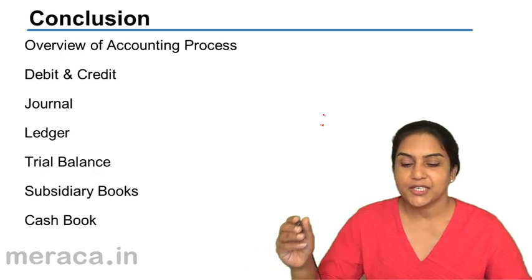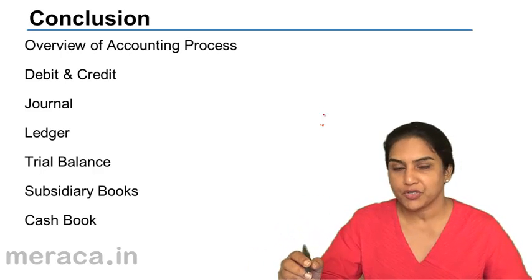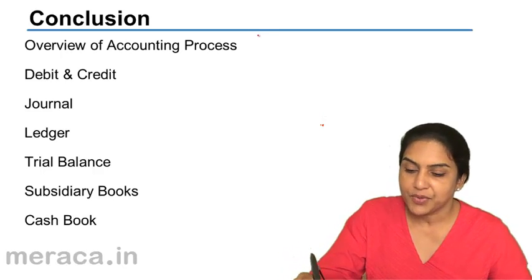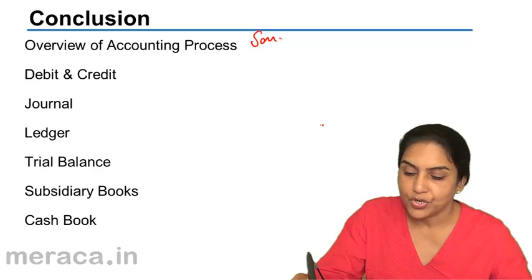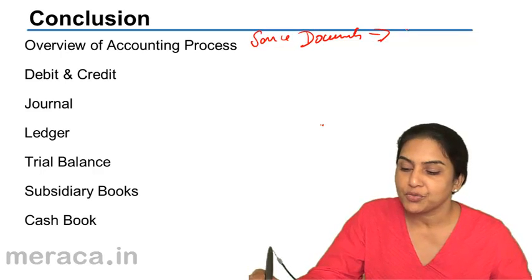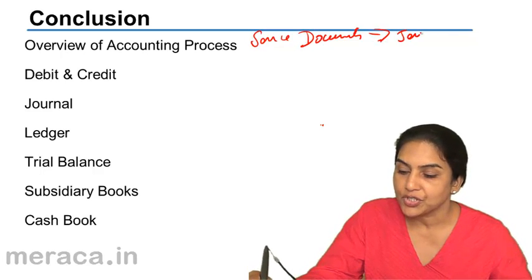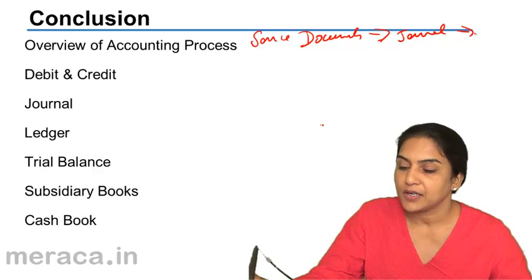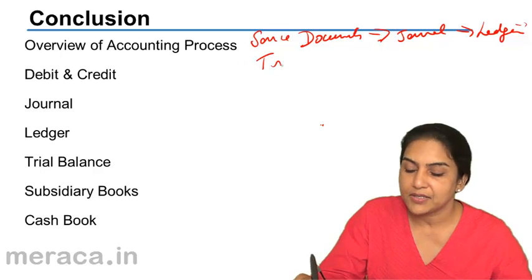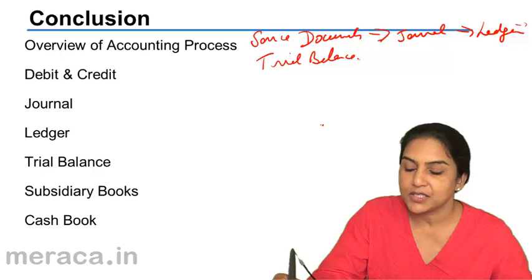We started with the accounting process. In the accounting process, we actually have certain source documents. From the source documents, we record in what is called a journal, to ledger, ledger to trial balance, and from the trial balance we make final accounts.